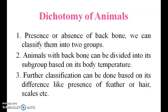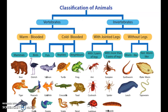Animals with a backbone can be divided into subgroups based on body temperature. Further, they can be classified based on differences like presence of fur, hair, scales, etc. That is how we classify them into vertebrates and invertebrates — and also with jointed legs or without legs.